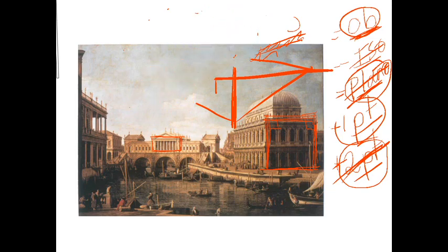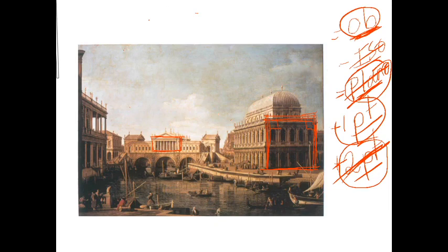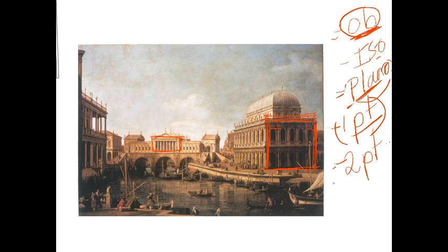So we've established that the two remaining possibilities are either oblique or one-point perspective. It's not isometric, not planometric, not two-point perspective. So now: as the object goes away from us, are these lines parallel or are they going towards a single vanishing point?